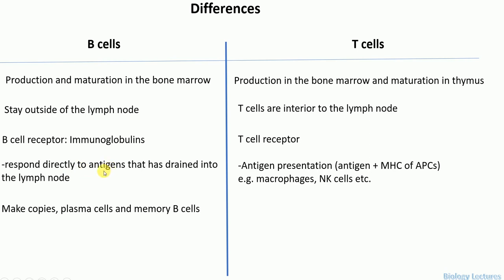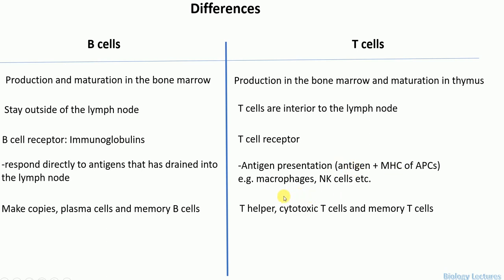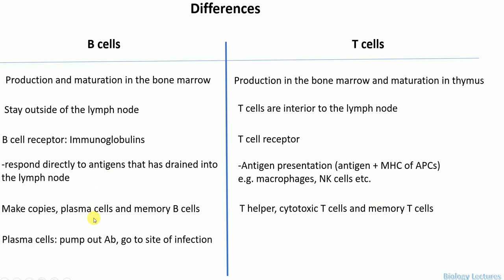After the B cell has responded to the antigens and been selected, it undergoes clonal expansion — making copies of itself — and differentiates into plasma cells and memory B cells. Whereas after a T cell has been selected upon recognizing the presented antigen together with the MHC molecule, it also makes copies of itself and differentiates into T helper cells, cytotoxic T cells, and memory T cells.